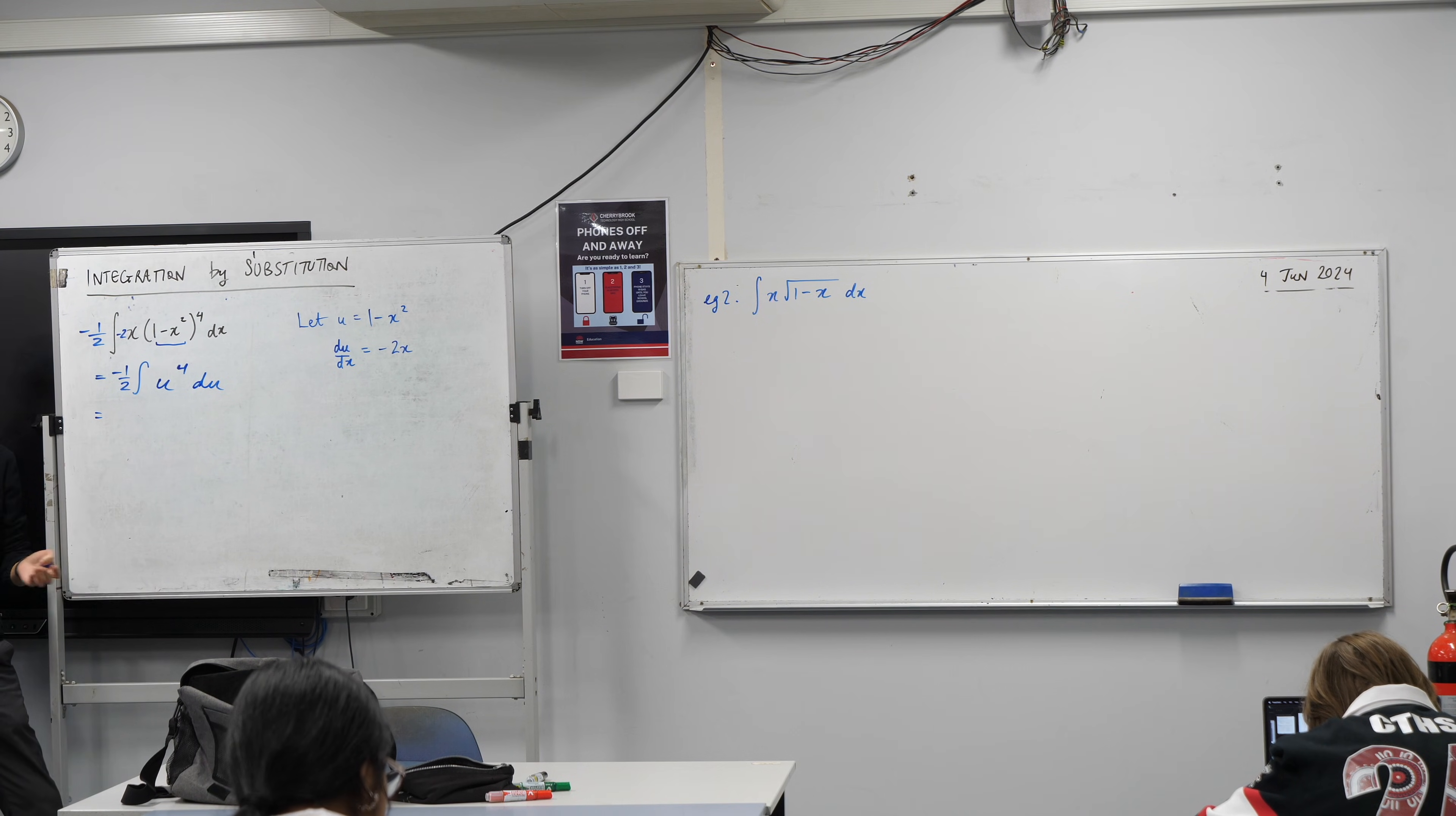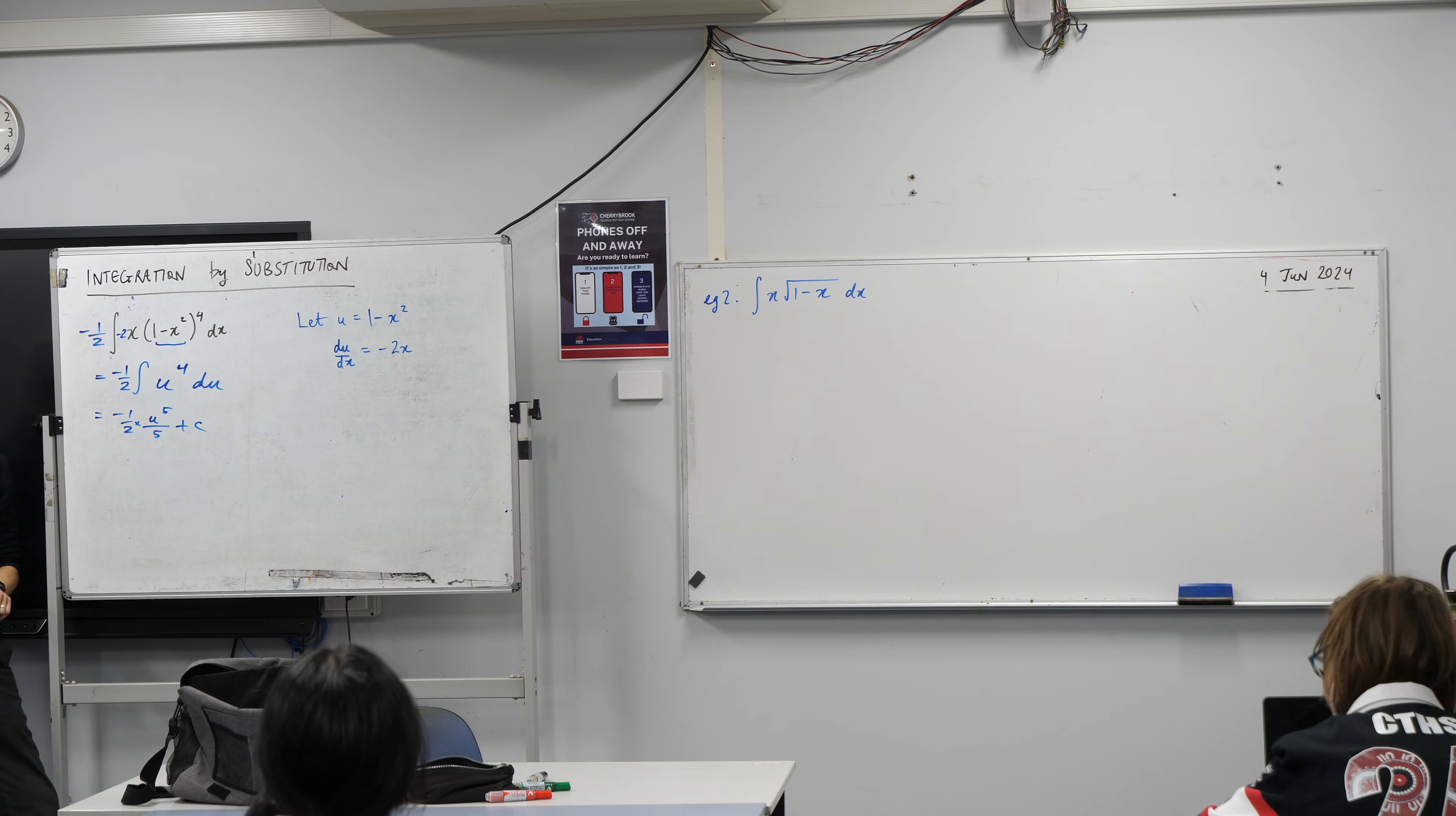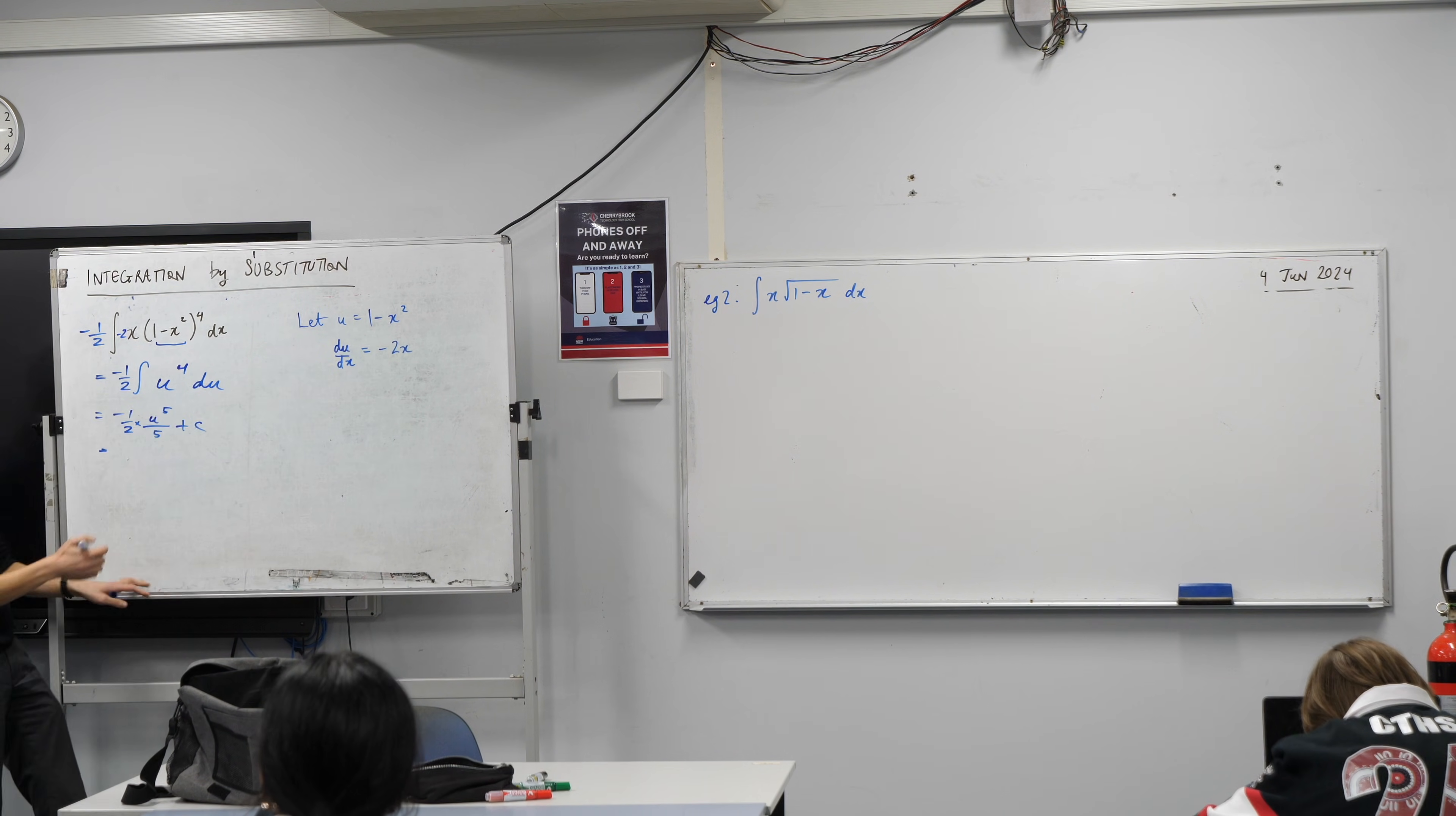And that's kind of all of the hard work, right? This is going to have that negative 1 half out the front. When you integrate u to the 4, what happens? u to the 5 on 5, so that's not too dramatic, like so. Of course, we've got our constant of integration there. And in order to tidy up here, I just want to make sure I go back to my original variable. I introduced u to solve it, but I should go back to the fact that it's (1 - x²).